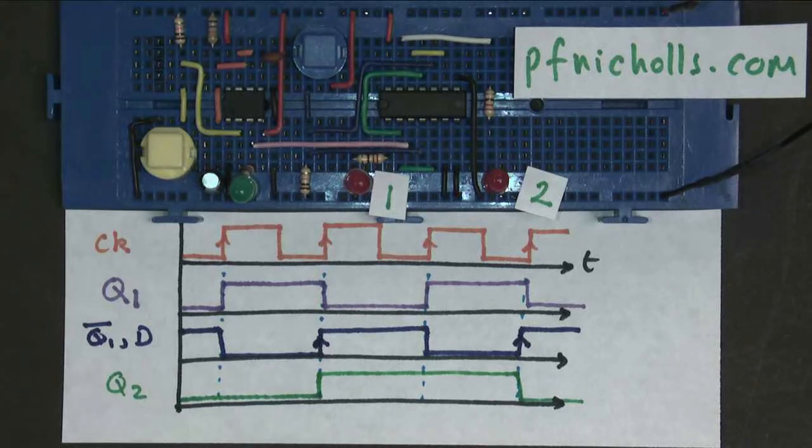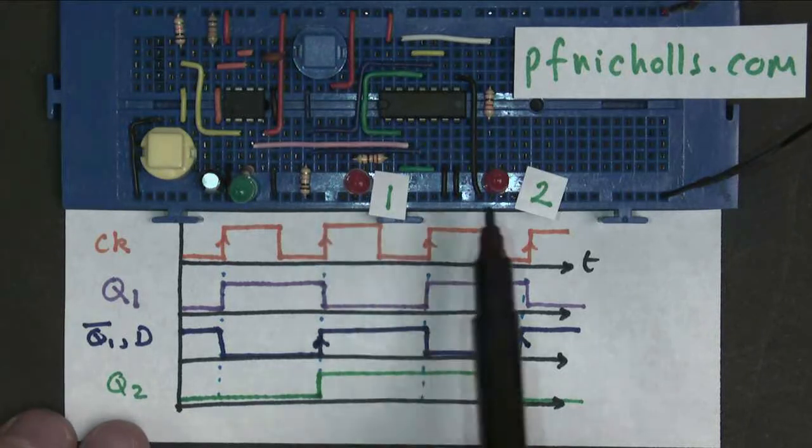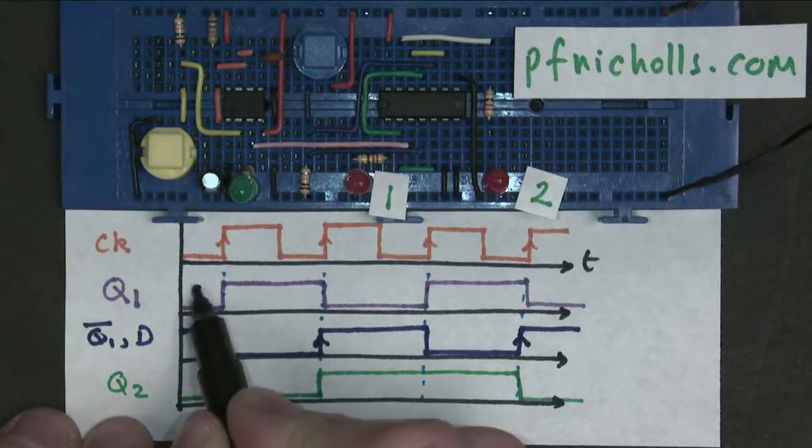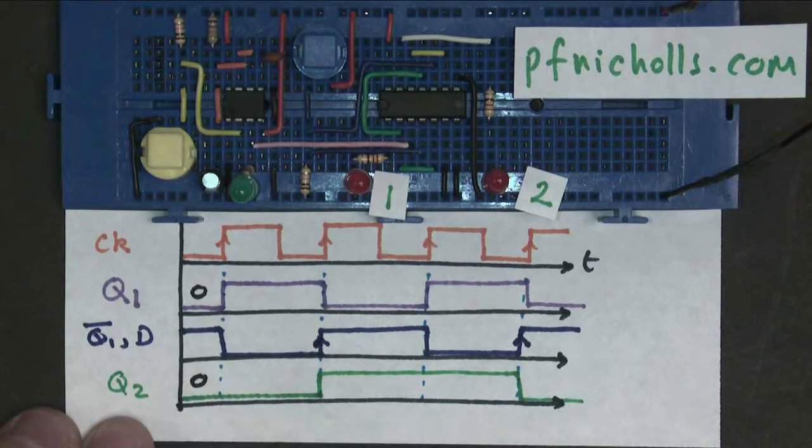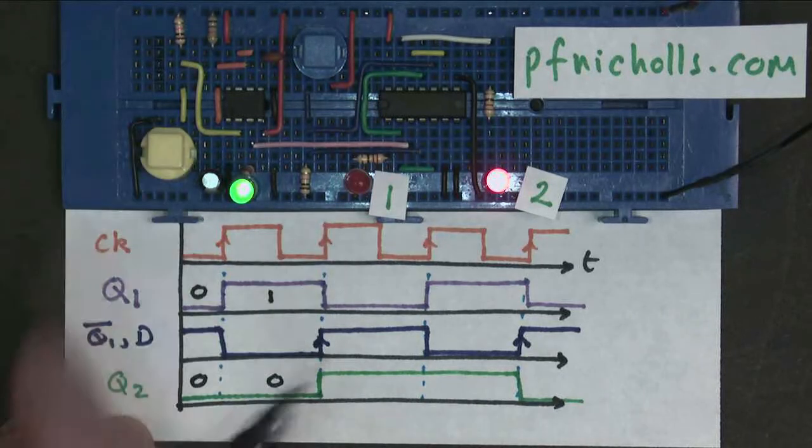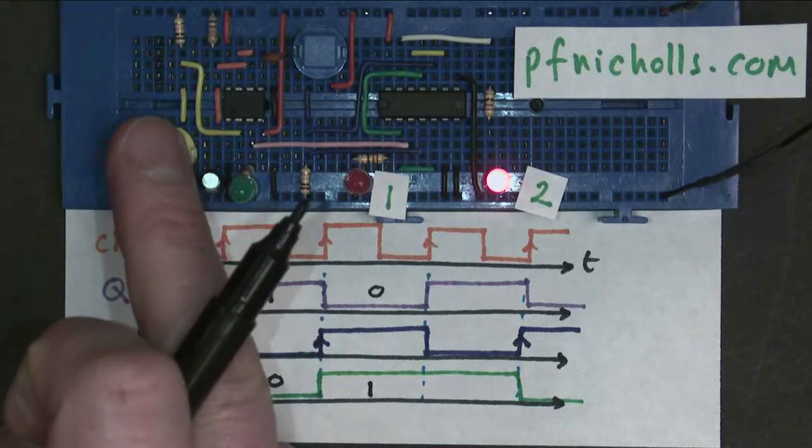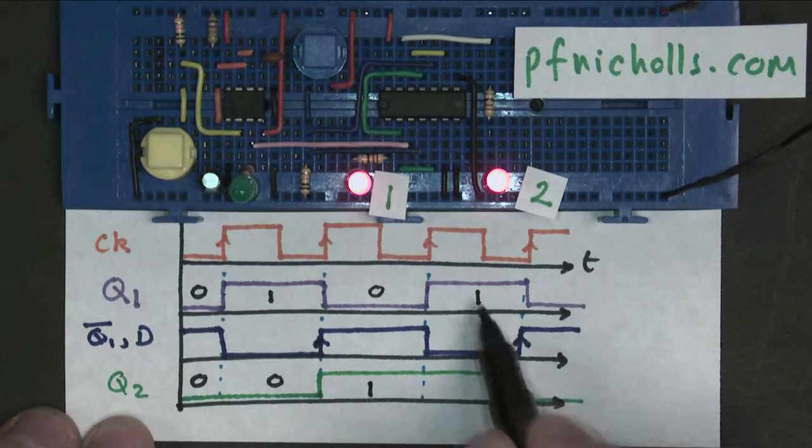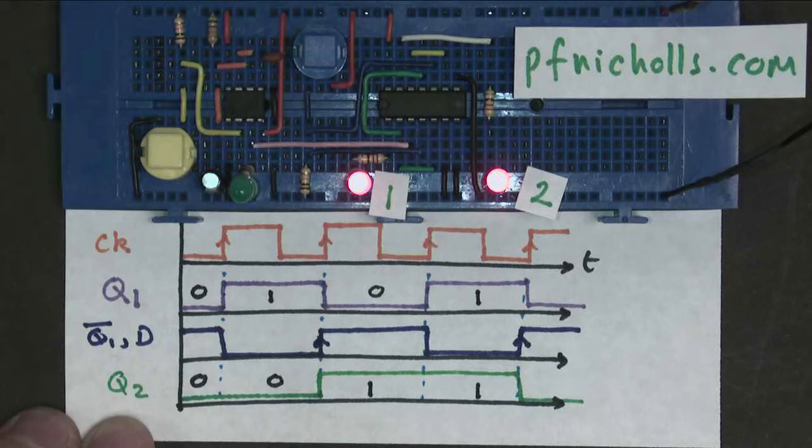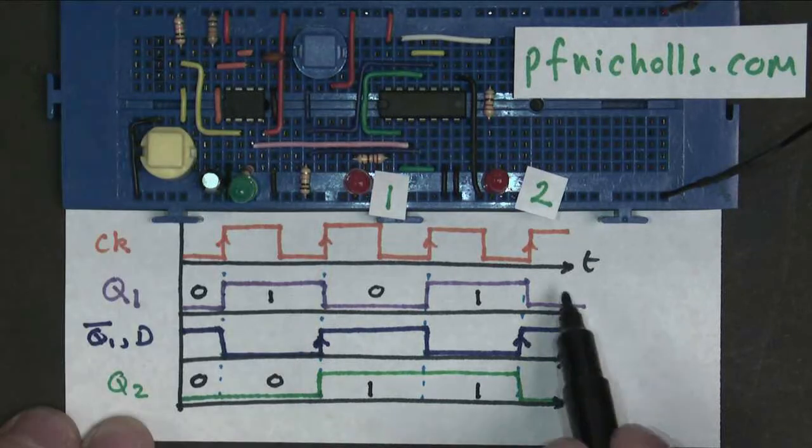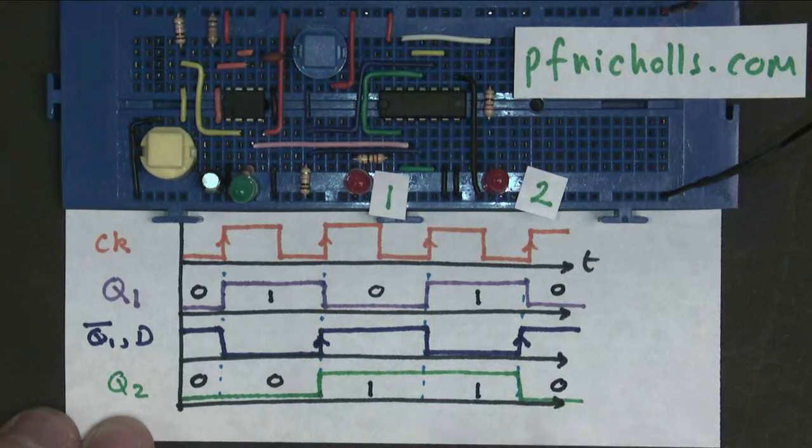Now if I look at my binary, in this situation here, I have them both off, so this is binary zero. After one clock, I have a one and a zero, so that's binary one. After this clock, I have a zero and a one, so that's binary two. After this clock, I have a one and a one, so that's binary three. And after this clock, I go back to two zeros.